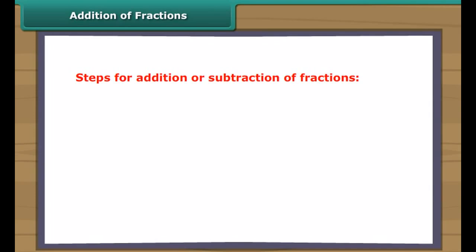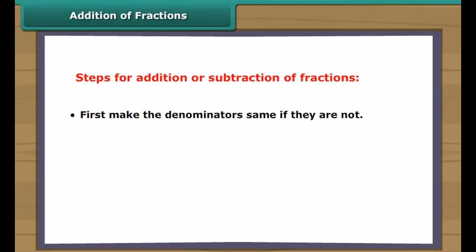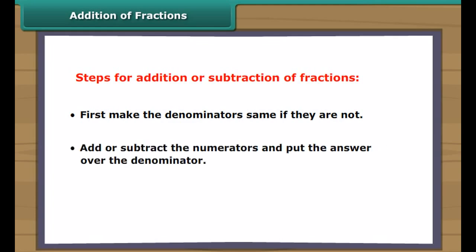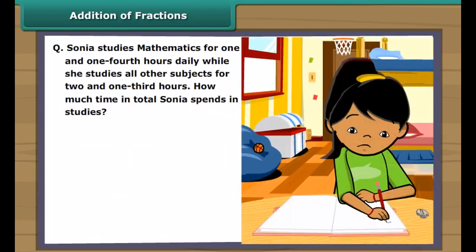Addition and subtraction of fractions: there are three simple steps. First, make the denominators the same if they are not. Then add or subtract the numerators and put the answer over the denominator. Finally, simplify the fraction if needed. Let us understand with the help of a few examples.